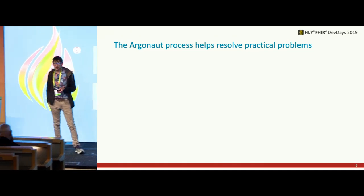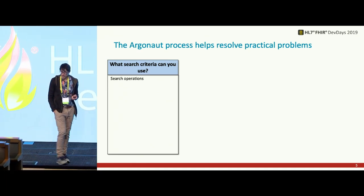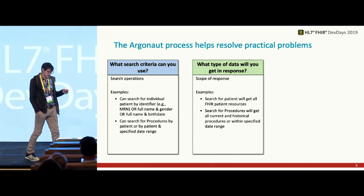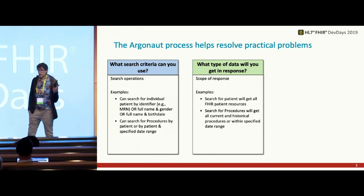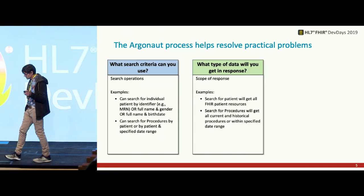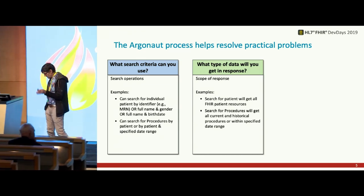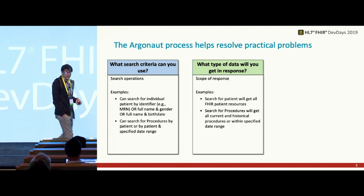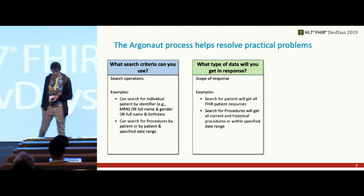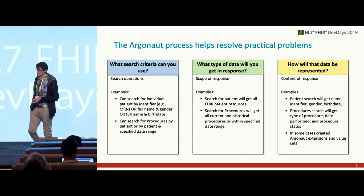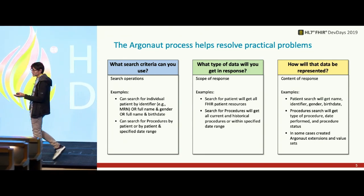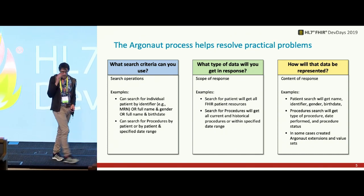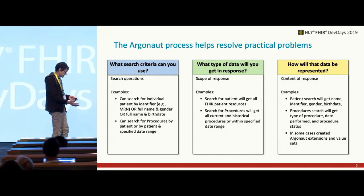The Argonaut process helps resolve practical problems: what search criteria to use for a particular use case, what operations and examples exist, and what type of data you'll get in response. We want consistency when you go across vendors, across data providers, EHRs, clinicians. If you can get some consistency as an app developer, you're not writing a new API for each individual endpoint. We also define how data is going to be represented — a common minimum bar of data elements and structure for consistency across the healthcare space.